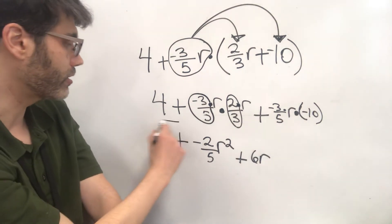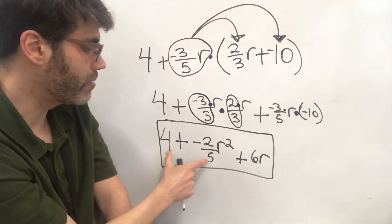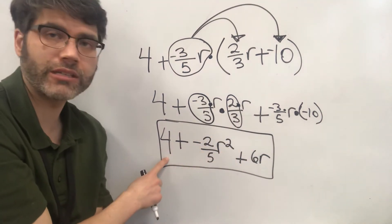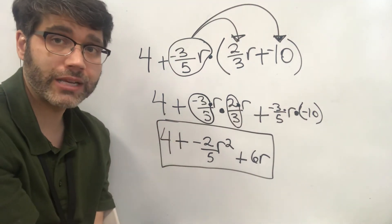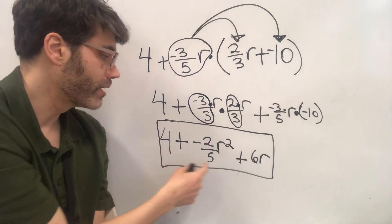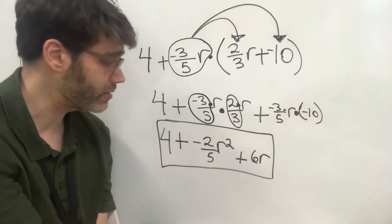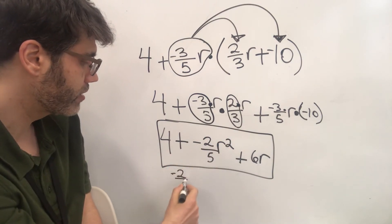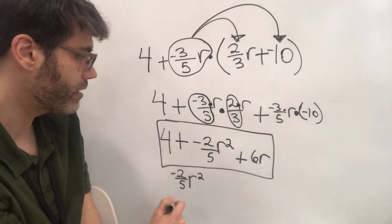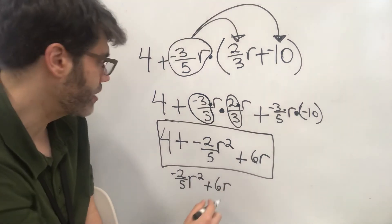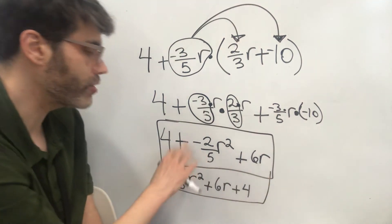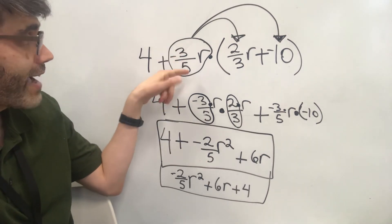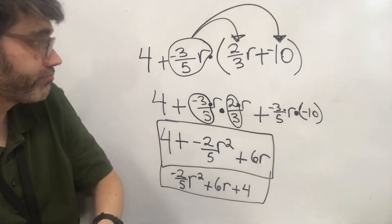So this is our answer. We can't go any further than this. Because to combine these, you need to have like terms. r is a different term than r squared. And both of these are different than the constant four. When we talk about numbers that are not being multiplied against any other variables or anything else, we just call them constants. So this is as far as we can go. We can rearrange this if you want. Remember, this negative needs to go wherever this term goes. So if we write negative two-fifths r squared out front, that negative needs to go with it. And then you can do six r if you want. And then you can do four. This is just another way that you could rearrange it. But they both mean the same thing. Both are completely correct.